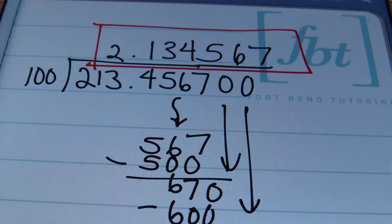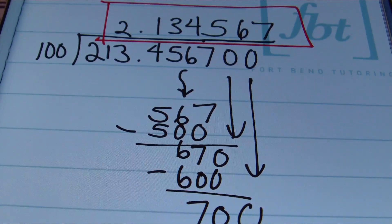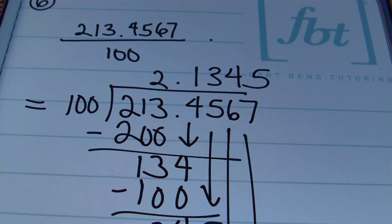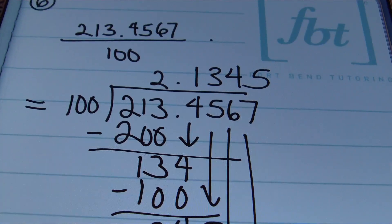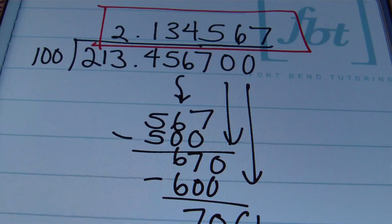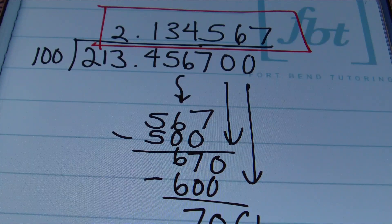You could have used a shortcut here: in the original problem, 213.4567 divided by 100, all you have to do when dividing by 100 is move the decimal two places to the left. Moving the original decimal two places left places it between the 2 and the 1, giving you the same answer. If you're dividing by 10, move the decimal one place left; by 1,000, move it three places left. That's how it works with powers of ten.